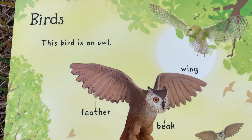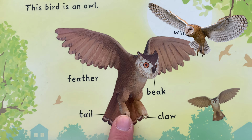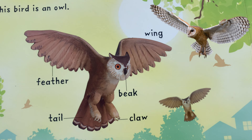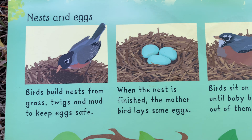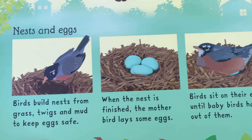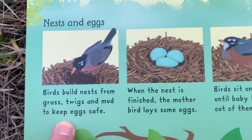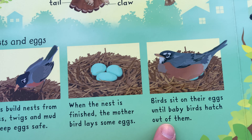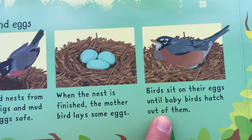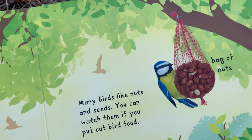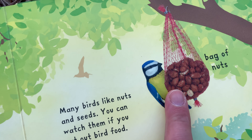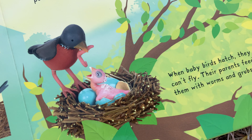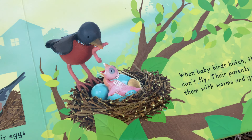Birds. This bird is an owl — have you seen an owl before? I've only seen one once or twice. I saw one in Japan, actually. They're cool to see. Birds build nests from grass, twigs, and mud to keep their eggs safe. When the nest is finished, the mother bird lays some eggs, and birds sit on the eggs until baby birds hatch out of them. You can put nuts in a bag and birds will eat from it — have you ever had a bird feeder before? Look at the mother bird giving a worm.